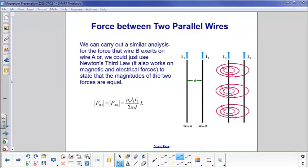I could do a similar analysis for the force that wire B over here exerts on wire A, in which case I would draw wire B's magnetic field, which would extend over here, and in this case it would be coming out of the page, and that's what wire I1 would feel, or I could just take a shortcut.